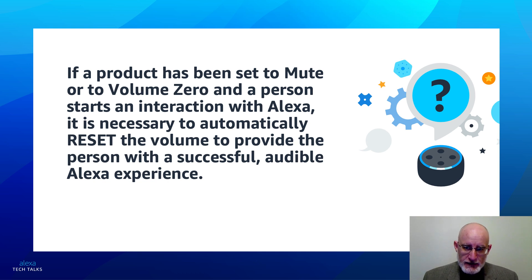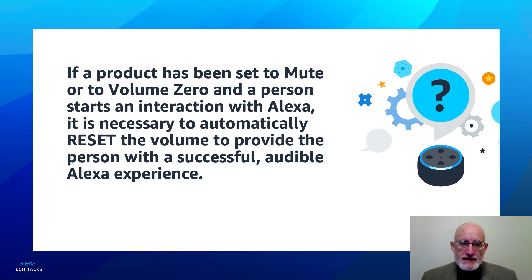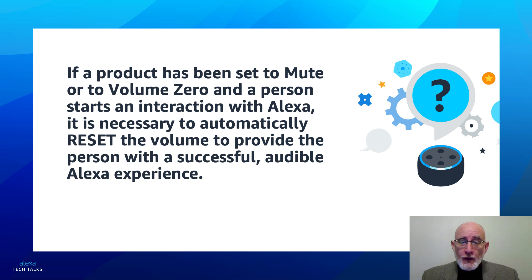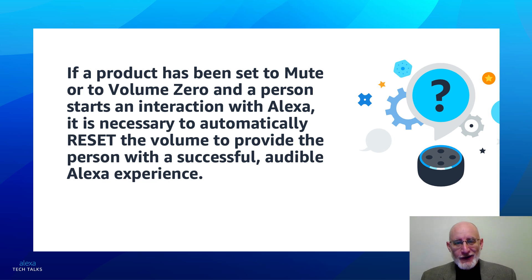It is necessary to automatically reset the volume to provide that person with a successful audible Alexa experience. This is where minimum listening level comes into the picture. What volume level should the product be reset to in order for that person to have an Alexa experience that is audible and successful? The minimum listening level: 50 to 60 dB at the outer limit of the area of interaction. Whatever volume setting is necessary for that product to produce that sound pressure level is what the product needs to be reset to in order for person B to hear their weather forecast.